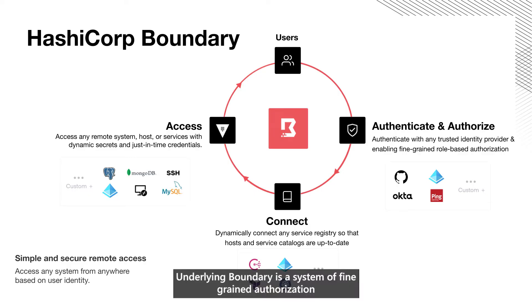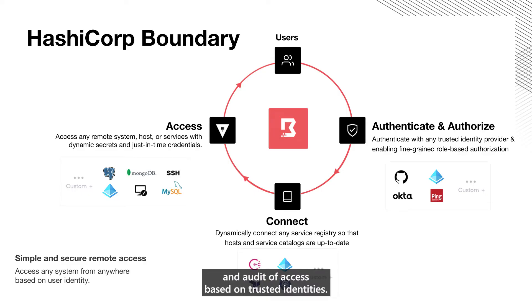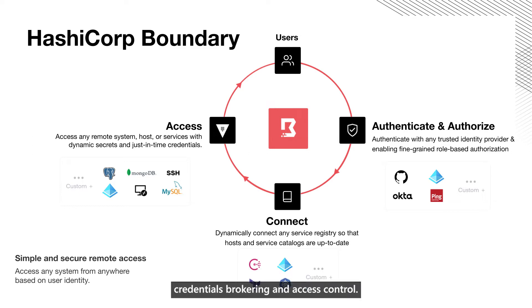Underlying Boundary is a system of fine-grained authorization and audit of access based on trusted identities. This reduces the management overhead of target registration, credentials brokering, and access control.